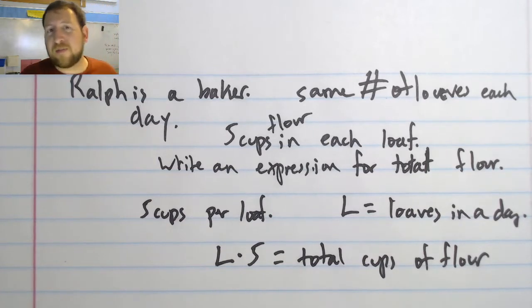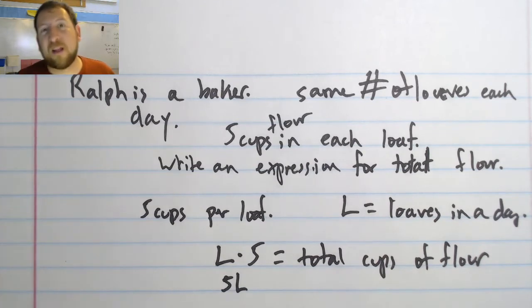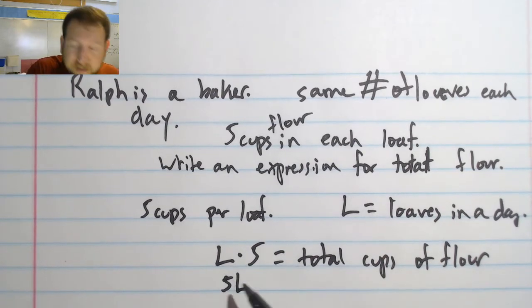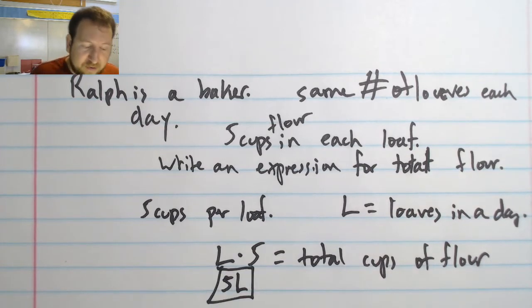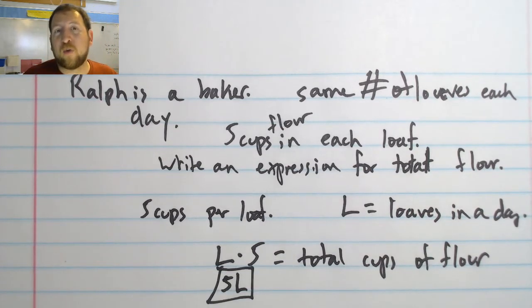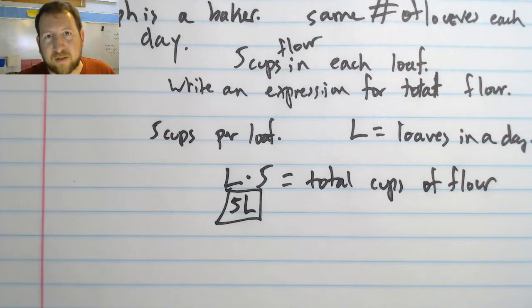And I can simplify L × 5, and I usually write this as 5L because, remember, mathematicians are lazy and we don't like to write any operation that we don't have to. So this is going to be the answer. This is going to tell me how many total cups of flour I need if I know how many loaves that I'm going to be cooking.